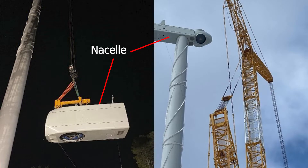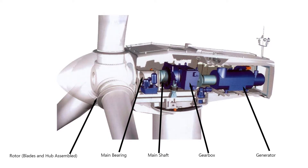The nacelle houses the wind turbine's gearbox, generator, and electric controllers. The hub is the nose-cone shaped component that connects the blades to the nacelle. The drive train on a turbine with a gearbox is comprised of the rotor, main bearing, main shaft, gearbox, and generator.